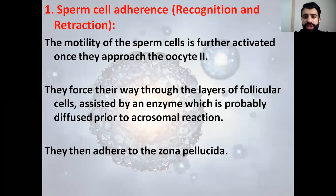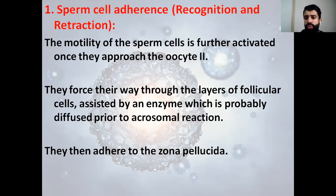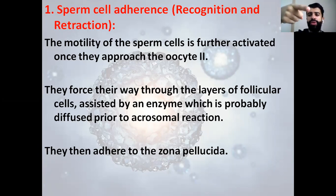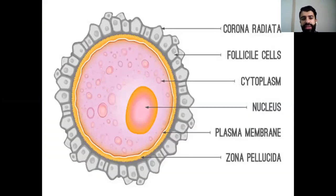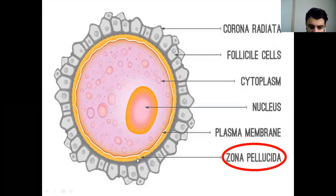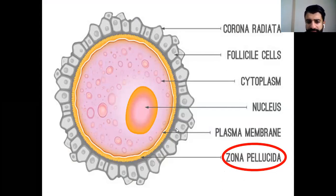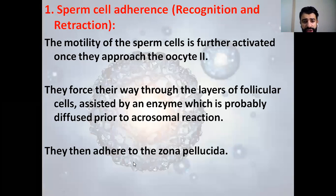First step: sperm cell adherence, called the recognition and attachment phase. The motility of the sperm cell is activated whenever they approach toward the oocyte 2. They force their way through the follicular cells, assisted by enzymes which are diffused prior to the acrosomal reaction. Then they adhere to what is known as the zona pellicida. The outer layer is called the corona radiata, and the inner-most layer is called the zona pellicida. So the sperm cells adhere to the zona pellicida.